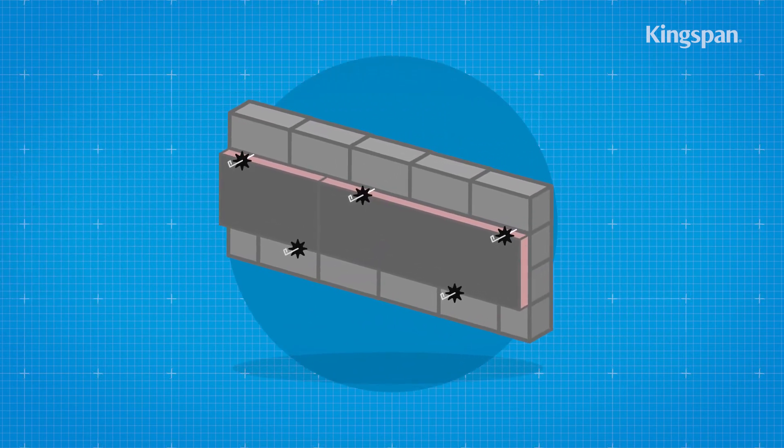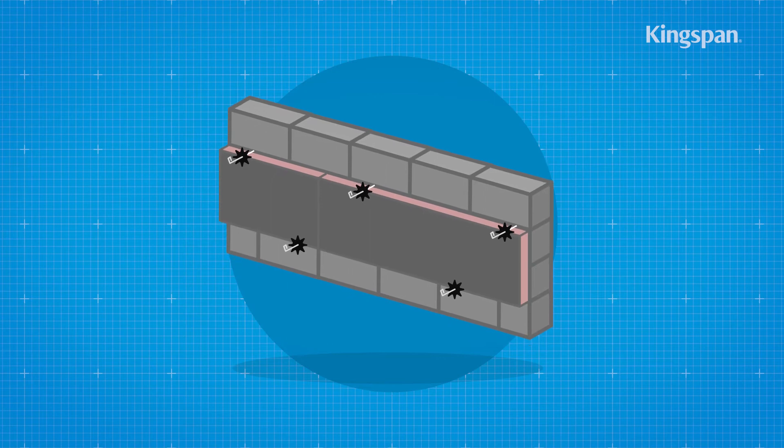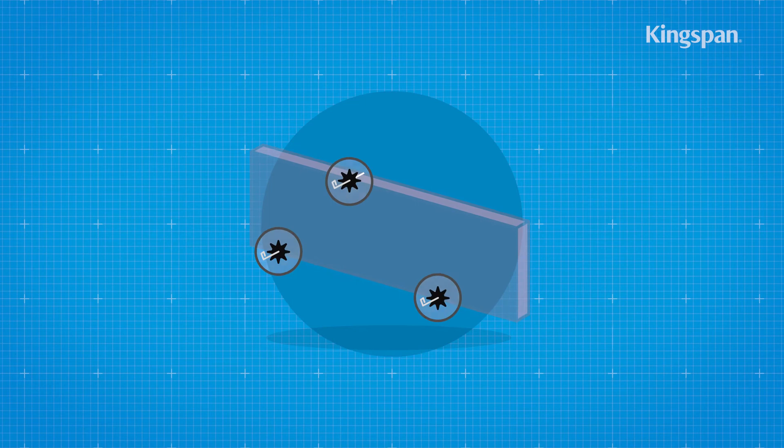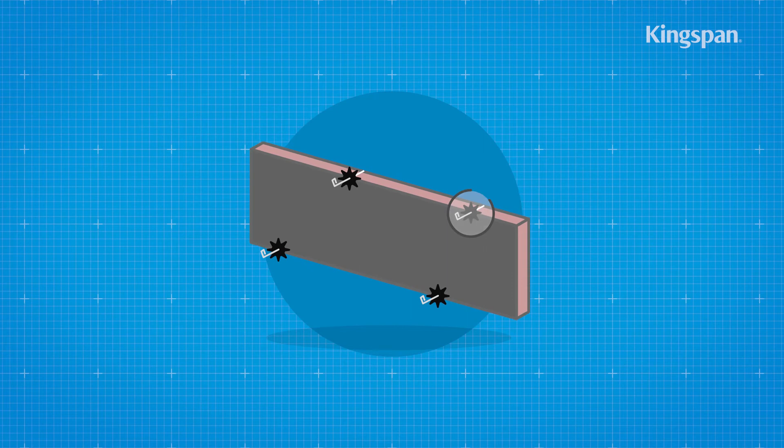Ensure each insulation board is retained tight against the inner leaf and joints are butted. Secure each board at a minimum of three points. Additional ties may also be required to satisfy structural requirements or to ensure adequate retention of boards or cut pieces.